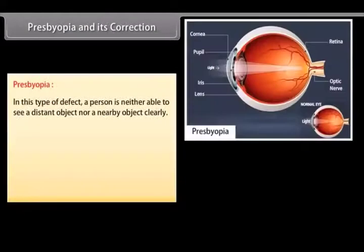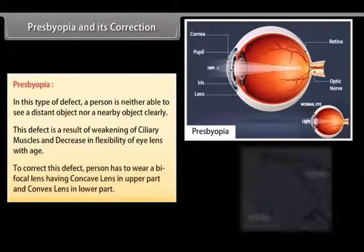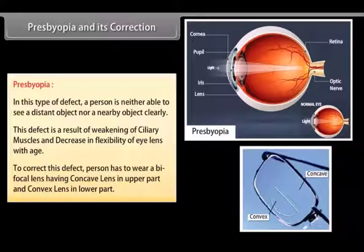Presbyopia and its correction: In this defect, a person is neither able to see a distant object nor a nearby object clearly. This defect is a result of weakening of ciliary muscles and decrease in flexibility of the eye lens with age. The person has to wear a bifocal lens having a concave lens in the upper part and a convex lens in the lower part.